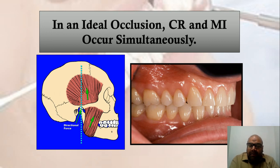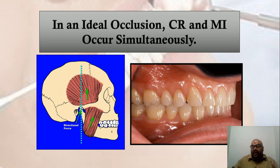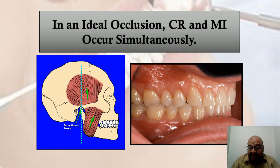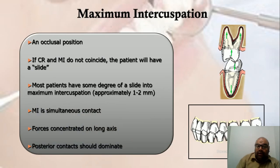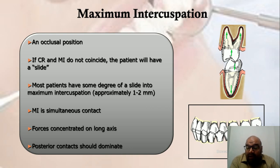In ideal occlusion, when the teeth are maximally in contact with each other, simultaneously the condyle is in its anterior and superior-most position — centric relation. Although considered ideal, this cannot be called normal because more than 85% of the population has a discrepancy between centric relation and maximum intercuspation. In most individuals, one or two posterior teeth contact in centric relation, and then there is a slide from centric relation to maximum intercuspation.